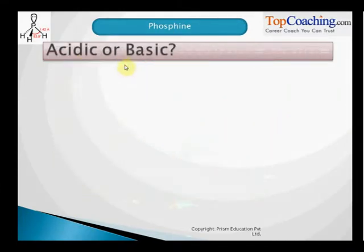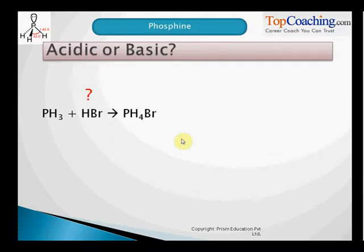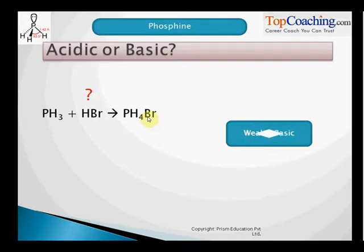Is Phosphine acidic or basic? To know whether Phosphine is acidic or basic, we need to look at this reaction. Phosphine on reacting with HBr forms its salt — it reacts with HBr, which is an acid. Since Phosphine can react with HBr to form its salt, Phosphine is weakly basic in nature.